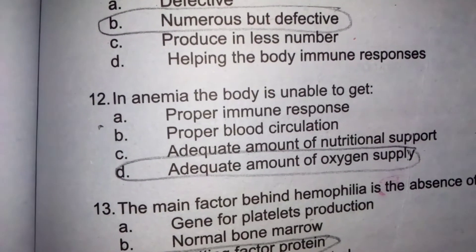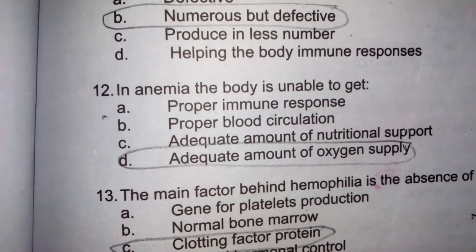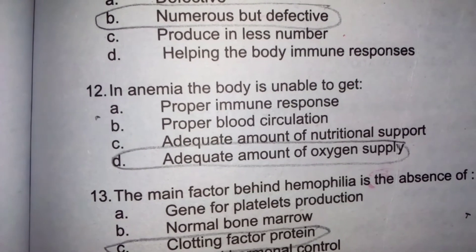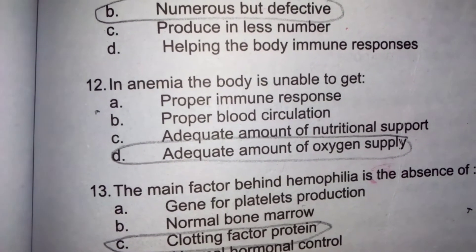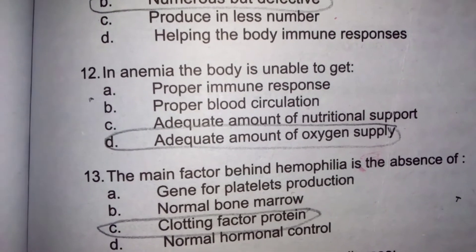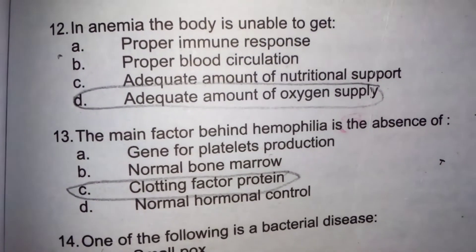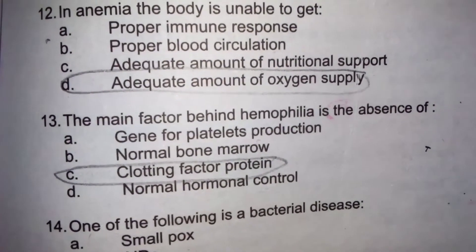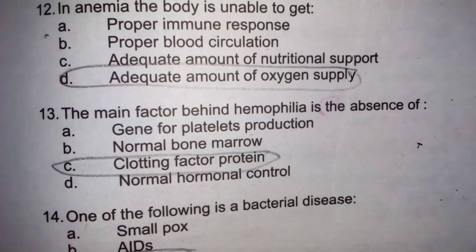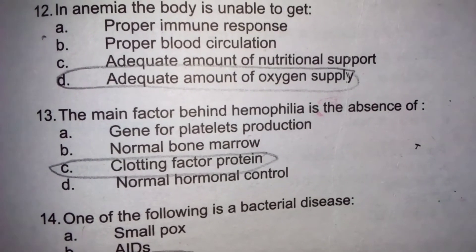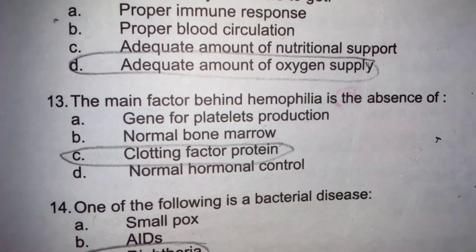In anemia, the body is unable to get an adequate amount of oxygen supply. The main factor behind hemophilia is the absence of clotting factor protein — جب clotting factor protein نہیں ہوتا تو خون نہیں جمتا۔